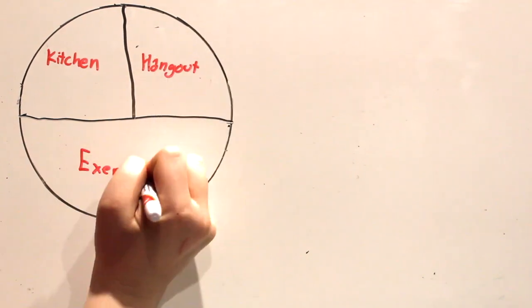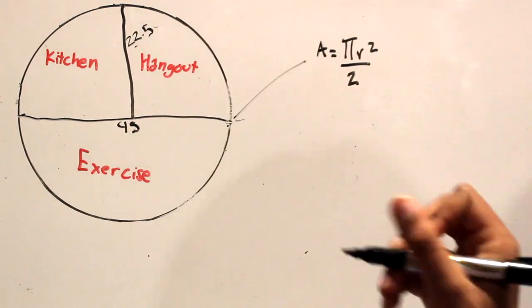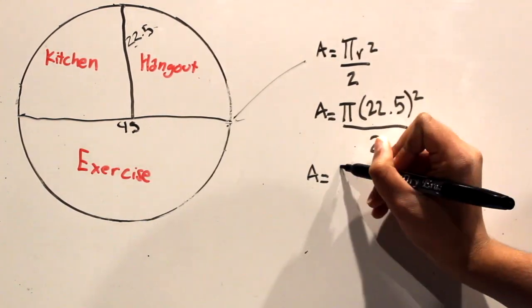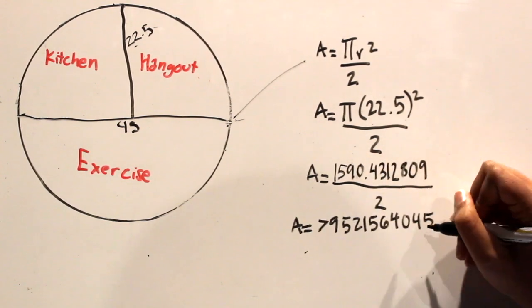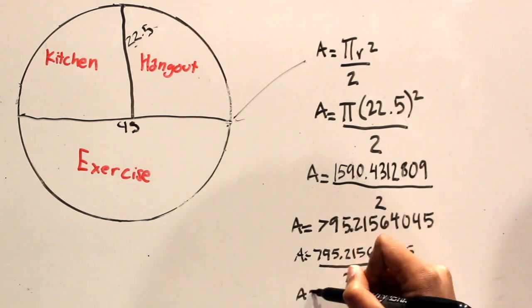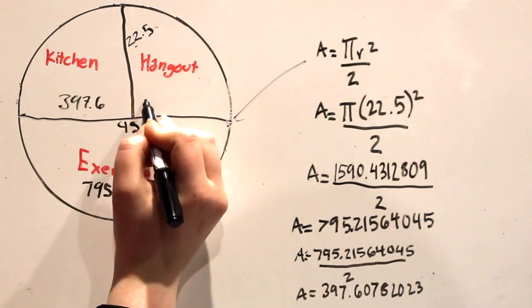The second floor of our dome contains a kitchen, a hangout room, and an exercise room. The exercise room has a total area of 795 feet, and the kitchen and hangout rooms have an area of 398 feet.